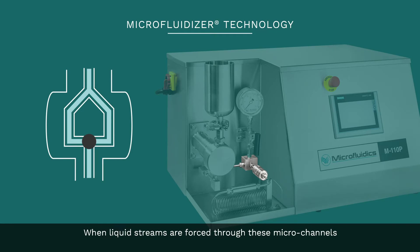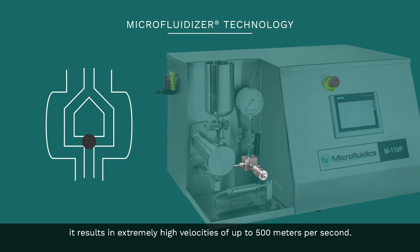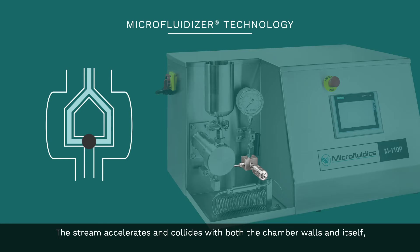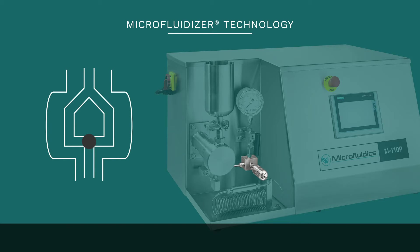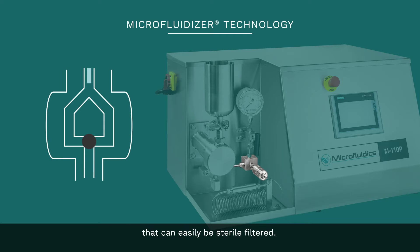When liquid streams are forced through these microchannels, it results in extremely high velocities of up to 500 meters per second. The stream accelerates and collides with both the chamber walls and itself, generating three types of forces – shear, impact, and energy dissipation.